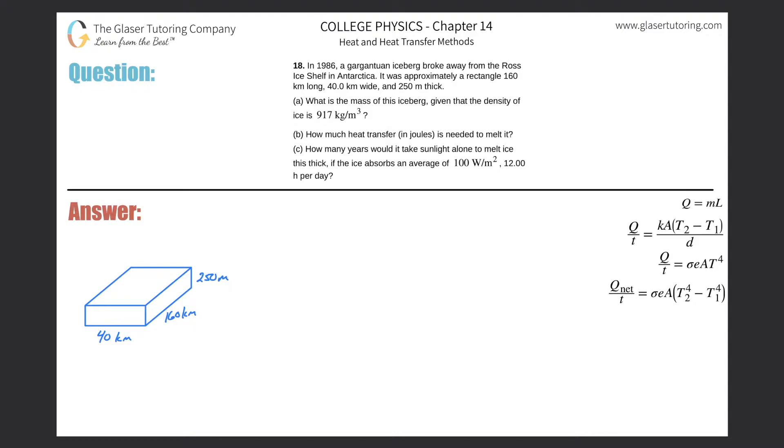Number 18. In 1986, a gargantuan iceberg broke away from the Ross Ice Shelf in Antarctica. It is approximately a rectangle 160 kilometers long, 40 kilometers wide, and 250 meters thick. Letter A: What is the mass of this iceberg given that the density of ice is 917 kilograms per cubic meter?